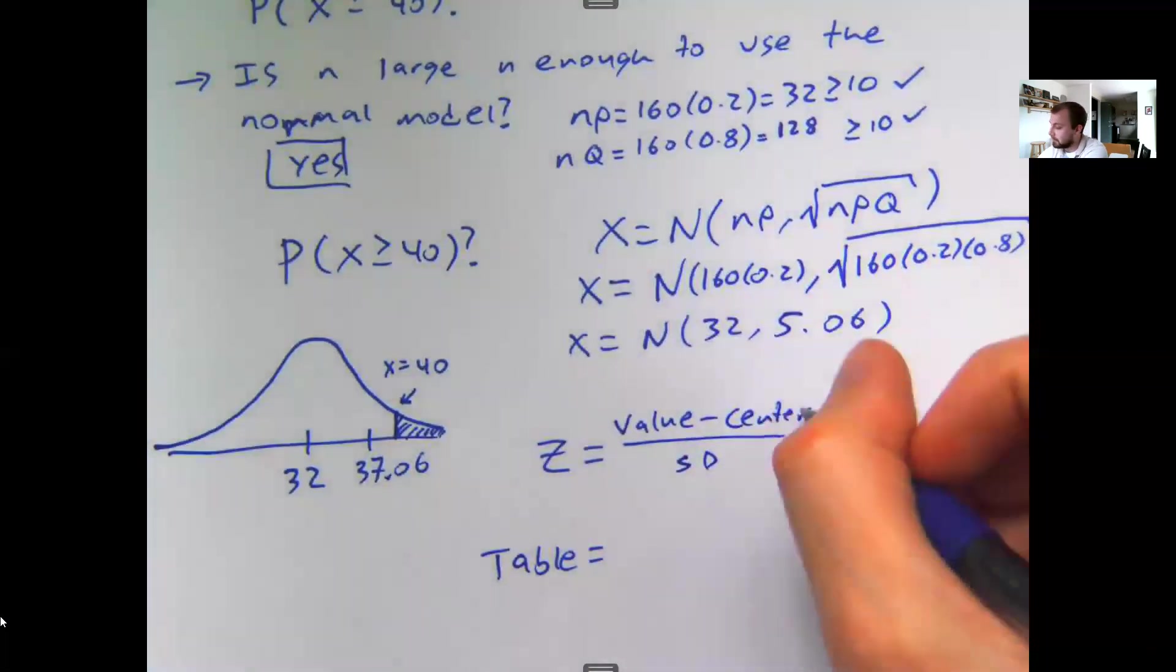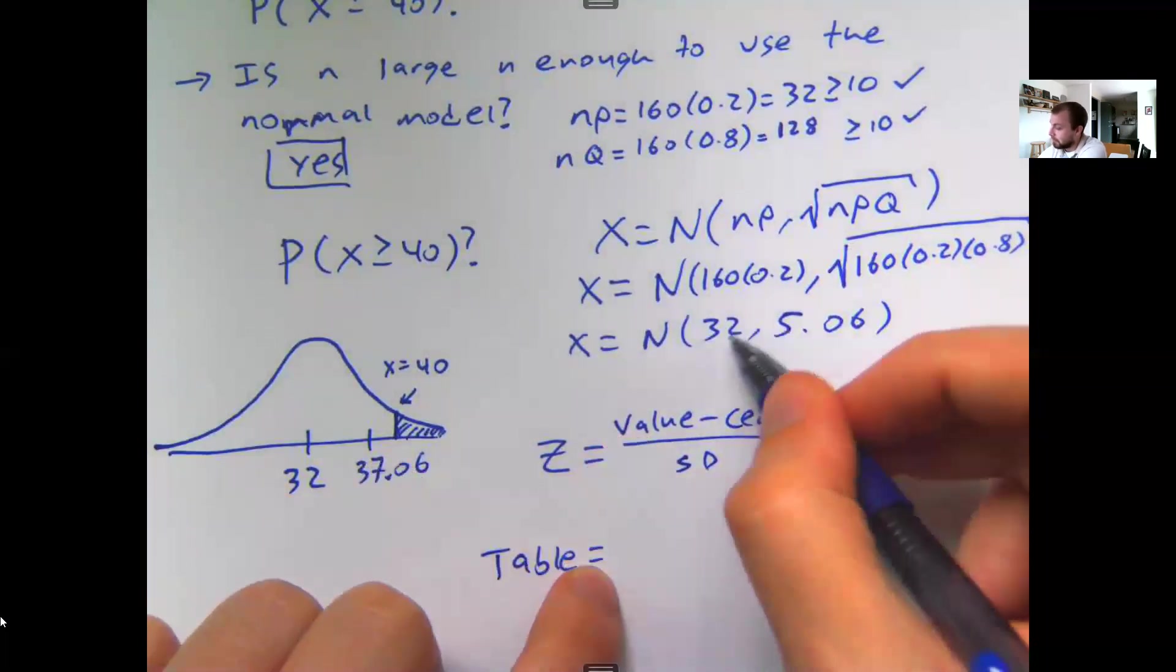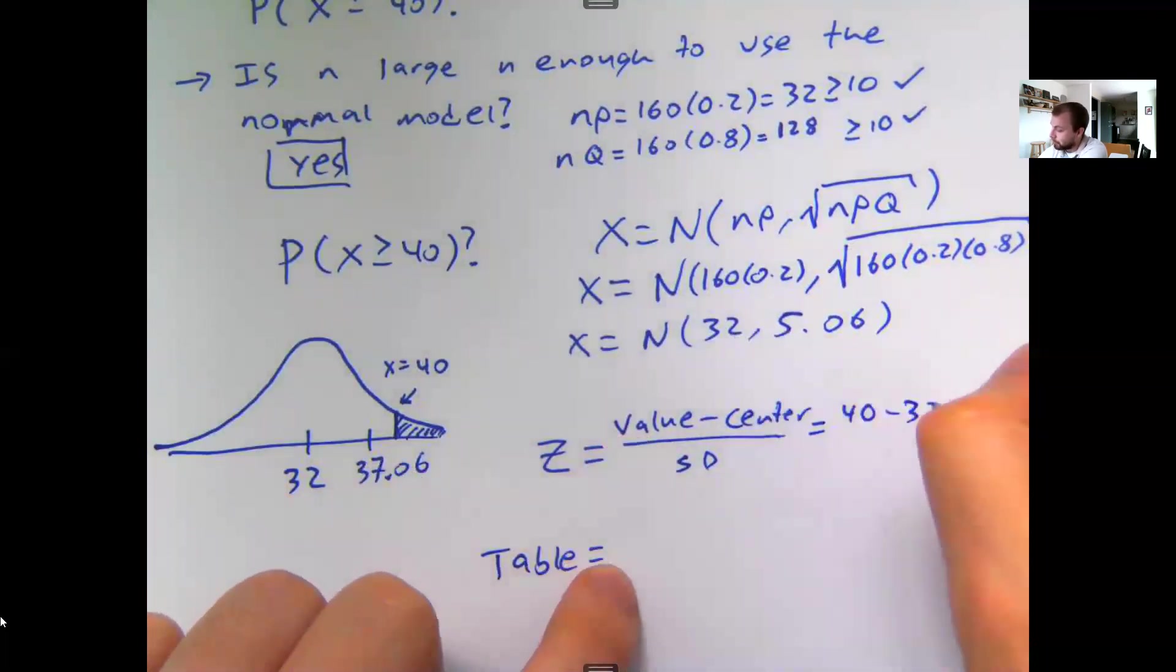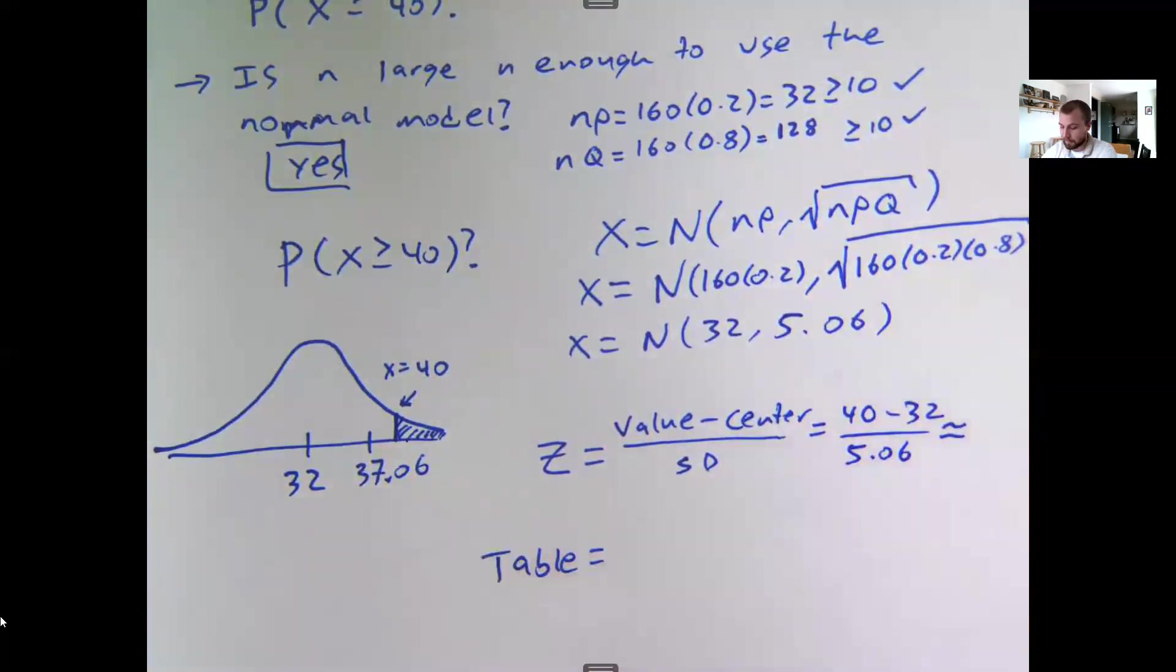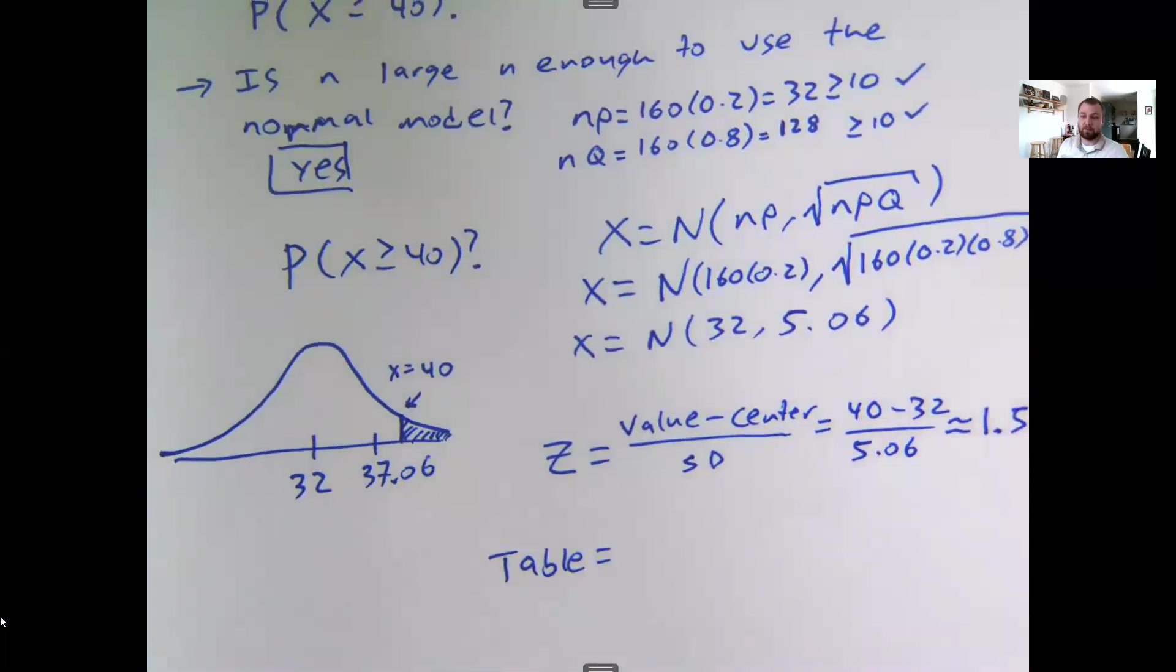So in this case, the question was about 40. The center or the average of my model was 32, and my standard deviation was 5.06 or so. Typing this into a calculator, it looks like I get 1.58 as my z-score.